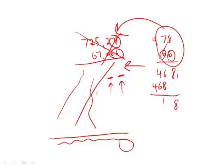You form a column here and a column here — that's all you really need. Drop the 8 straight down, 6 plus 8 is 14, and you don't have to worry about the other noise. 4 plus 8 is 12. That gives us the units and tens digits, and there's our answer.